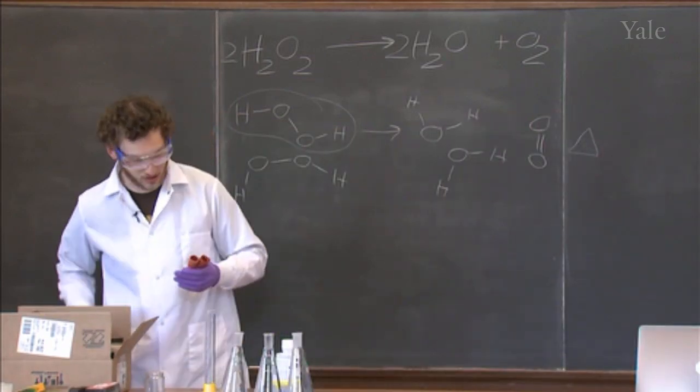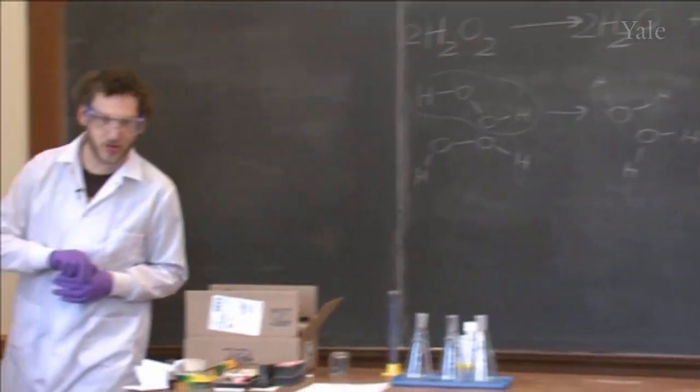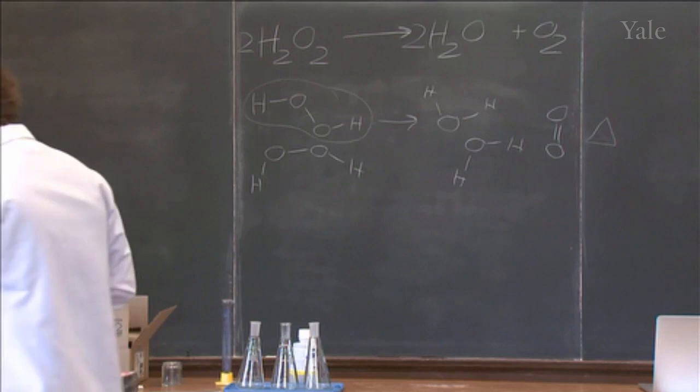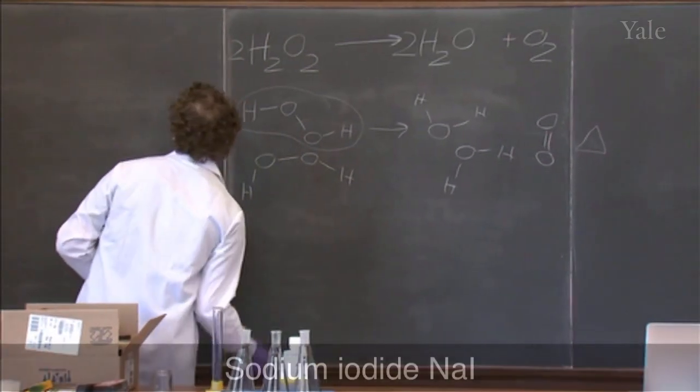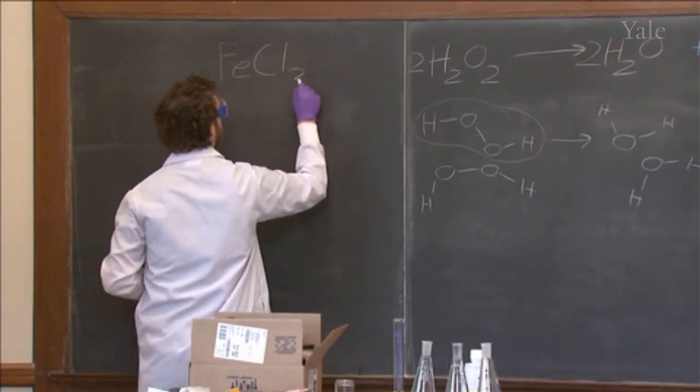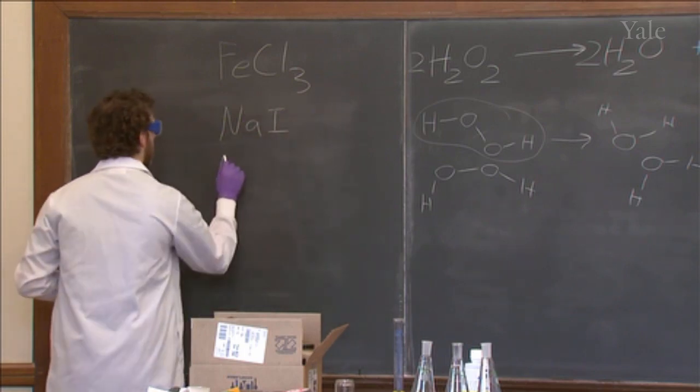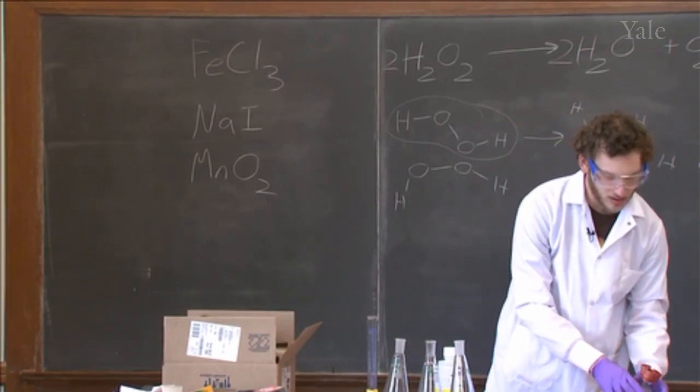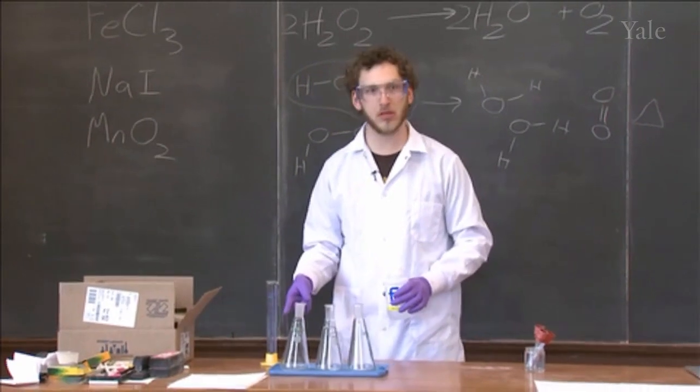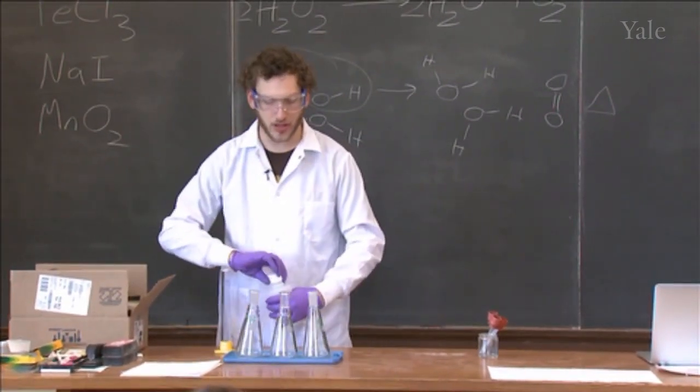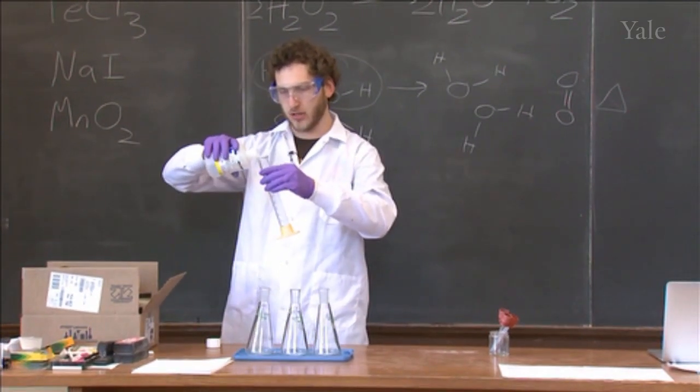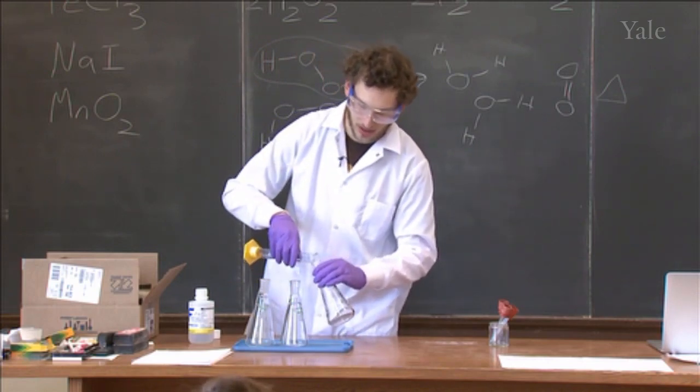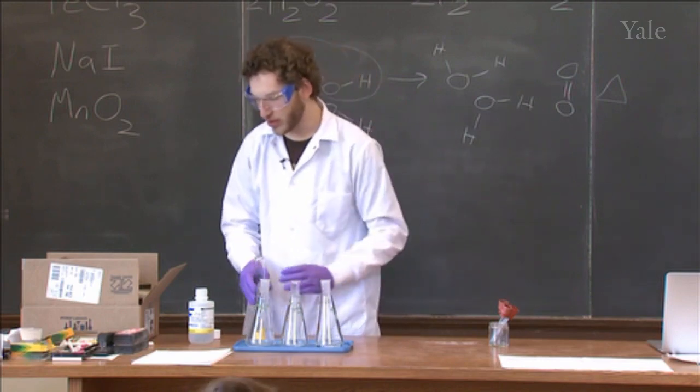There are catalysts that will make this reaction go millions or billions of times faster than it does just at room temperature. Just so you have an idea when we're talking about substoichiometric amounts, I have about 10 milligrams of three different catalysts. So you have a white powder, a yellow powder, and a black powder. The yellow powder is iron chloride, the white powder is sodium iodide, and the black powder is manganese dioxide. About 10 milligrams of each of the catalysts. I'm going to put 15 milliliters or approximately 15 grams of this solution in each of these flasks. The solution is only about a quarter hydrogen peroxide, but it's still several grams of hydrogen peroxide to 0.01 grams of catalyst.